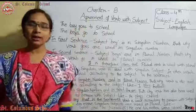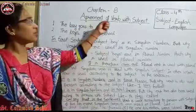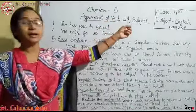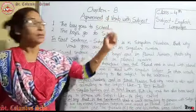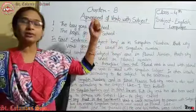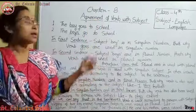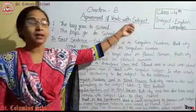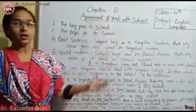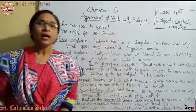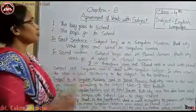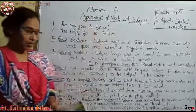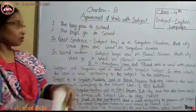Today our topic is Agreement of Verb with Subject, means क्रिया का कर्ता के साथ सम्बन्ध। यहाँ पर agreement means समझोता होता है, but यहाँ पर verb और subject का सम्बन्ध हमें बताना है। क्रिया का verb का subject के साथ सम्बन्ध। So, let's start.